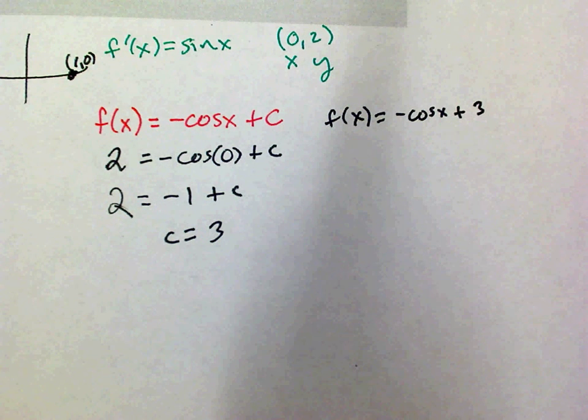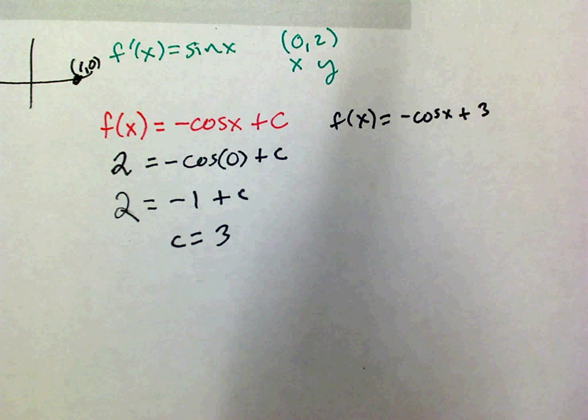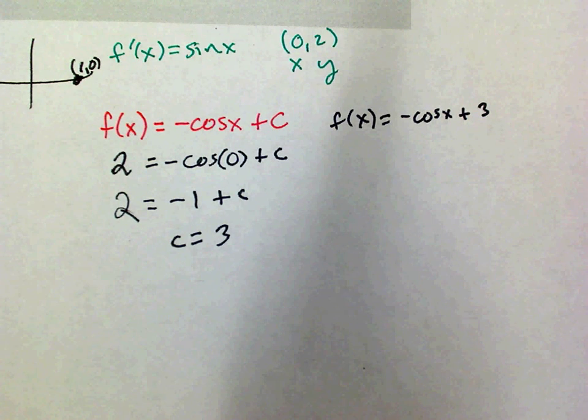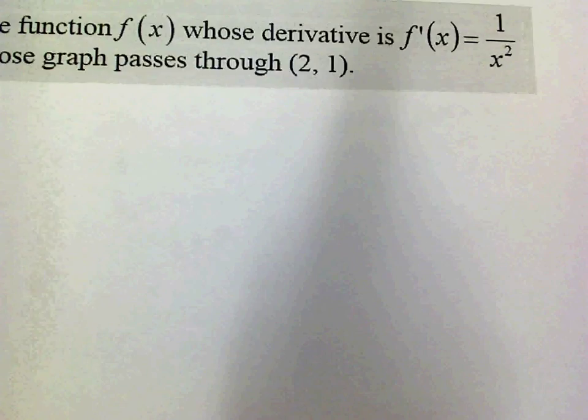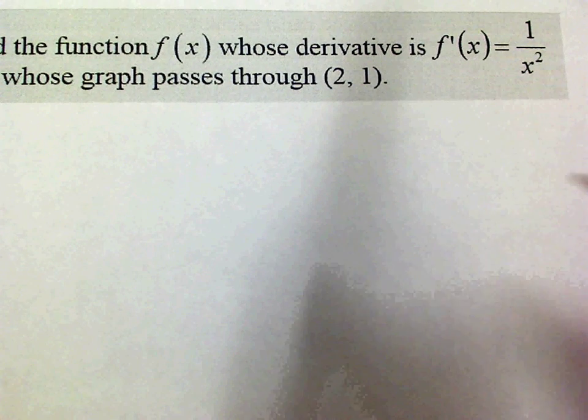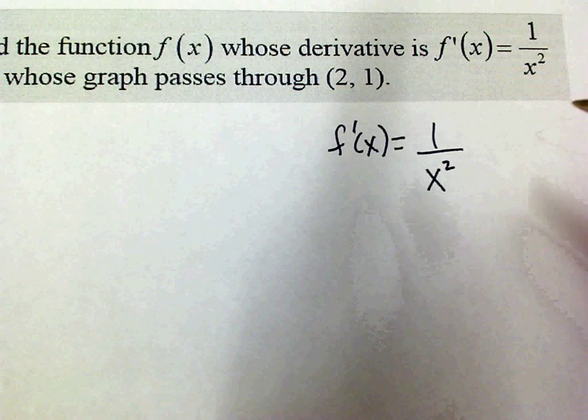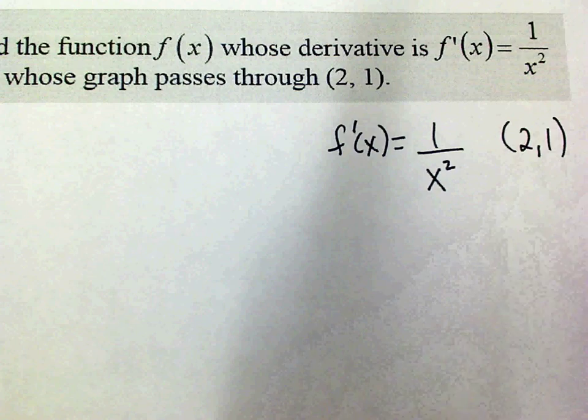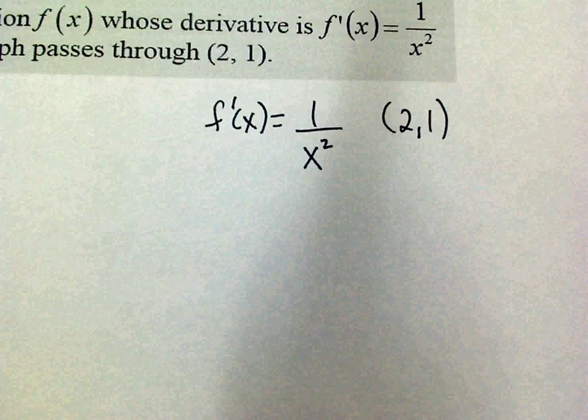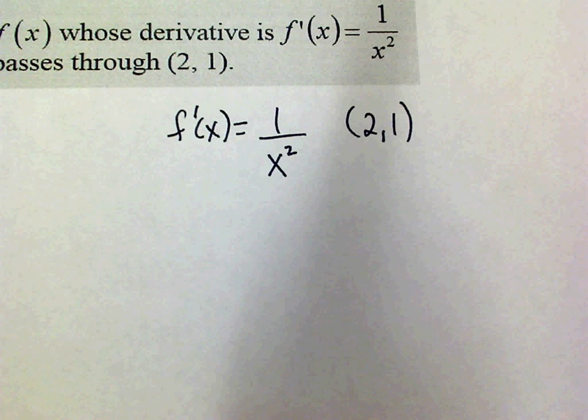Now let's do this one. Write down f prime of x equals 1 over x squared. And then write down the point 2, 1. All right, what are you going to do? Yeah, go backwards. How are you going to, what are you going to rewrite this? x to the negative 2? So I'm going to rewrite this as x to the negative 2 so I can think of it like that.